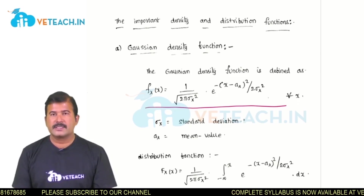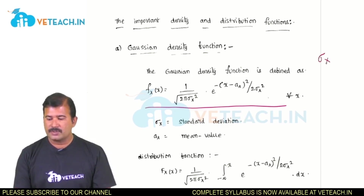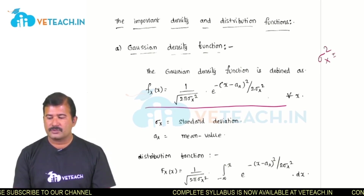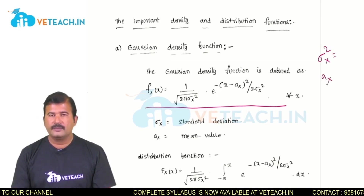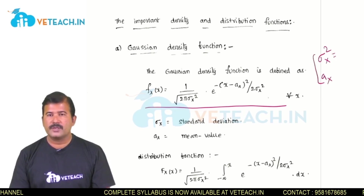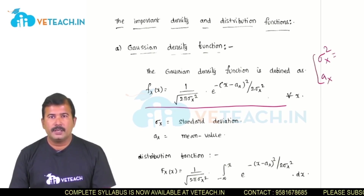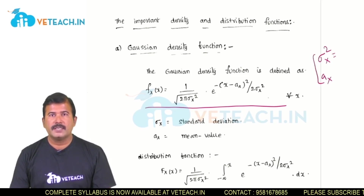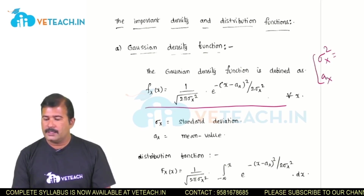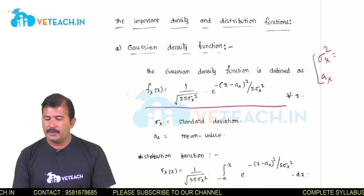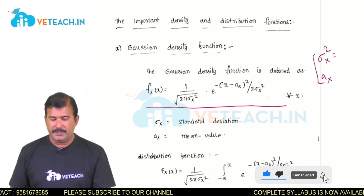Here, sigma x is the standard deviation. Standard deviation is the positive square root of the variance. Sigma x squared is the variance and Ax is the mean value of the random variable. These two are also known as the first two moments of a random variable. In the second unit on operations on a single random variable, we will come across these two parameters.